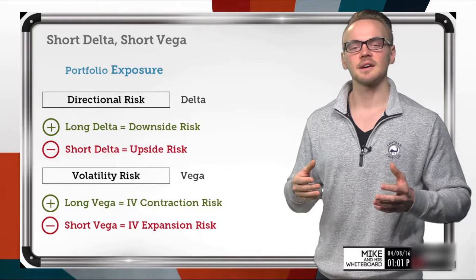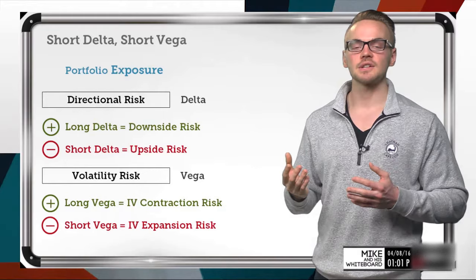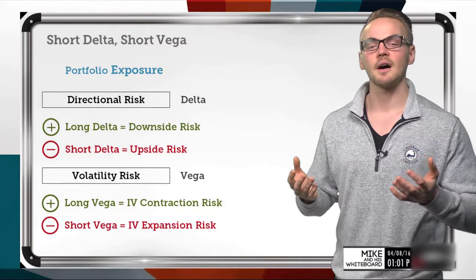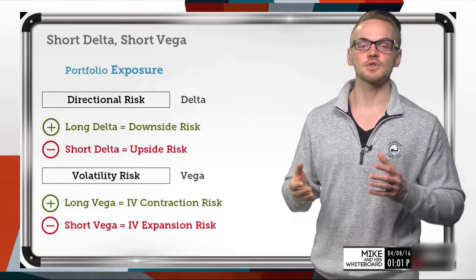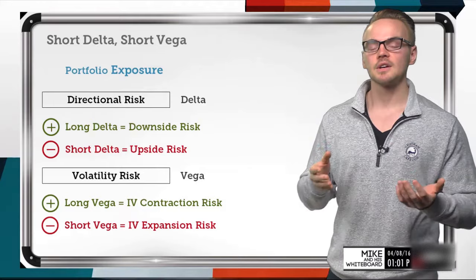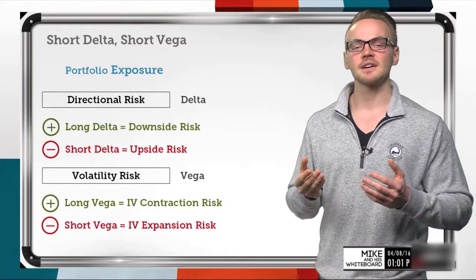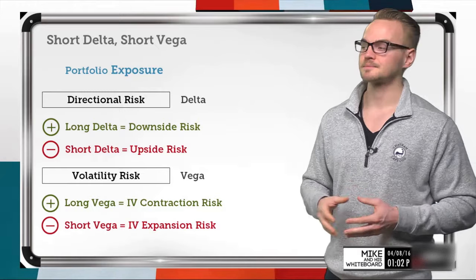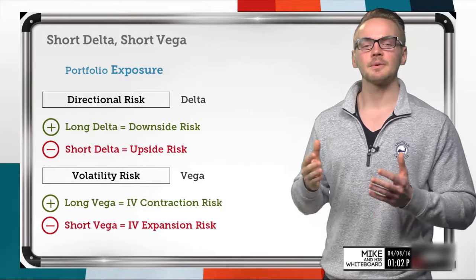When I'm long delta, my risk is to the downside. I have a positive delta value, and delta is just the rate of change of an option's price given a one-dollar increase in the underlying. If the underlying increases and I have a positive delta, my position should increase in price as well. Some popular bullish or positive delta strategies might be something like a short put, a long call spread, or a long call diagonal spread. Anything that yields a positive delta is going to be beneficial if the underlying goes up, so my risk would be to the downside.